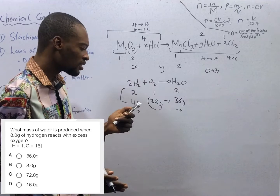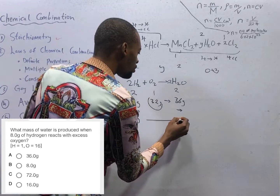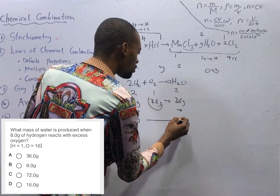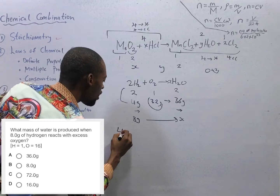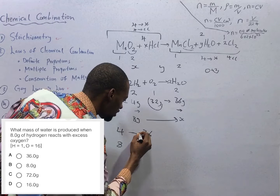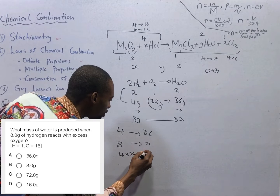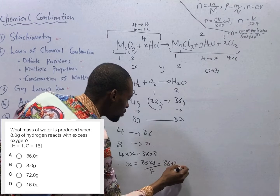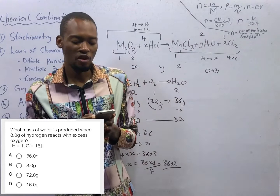We are given just 8 grams of hydrogen. So what will 8 grams of hydrogen produce? Call it S. If 4 grams produce 36, 8 grams should produce S. Cross multiplying: 4 times S equals 36 times 8. S is therefore 36 times 8 over 4 — that is 36 times 2, which gives you 72. So C is the correct option.